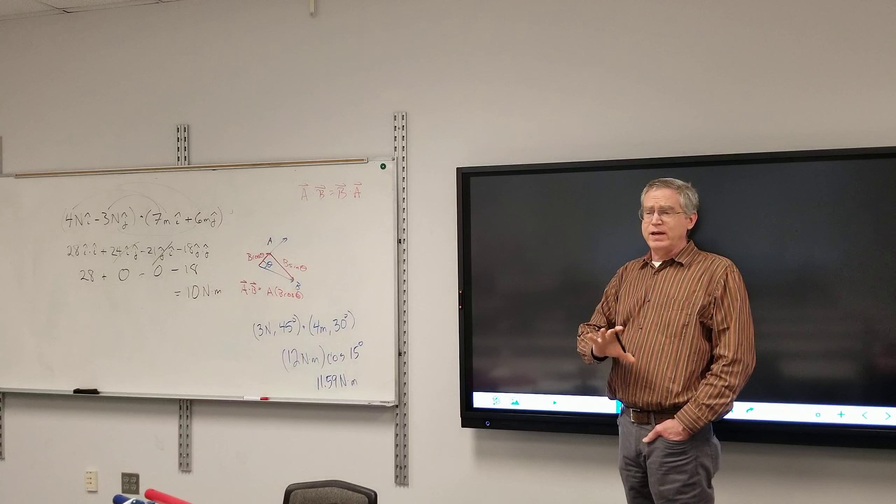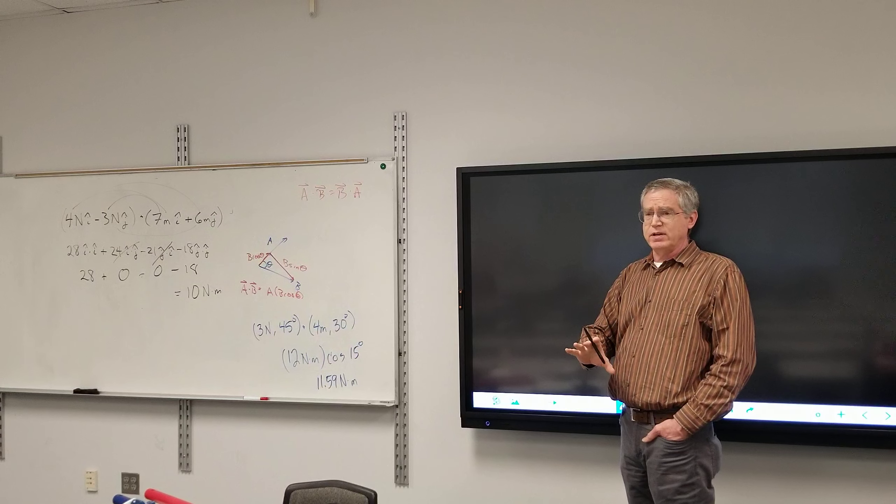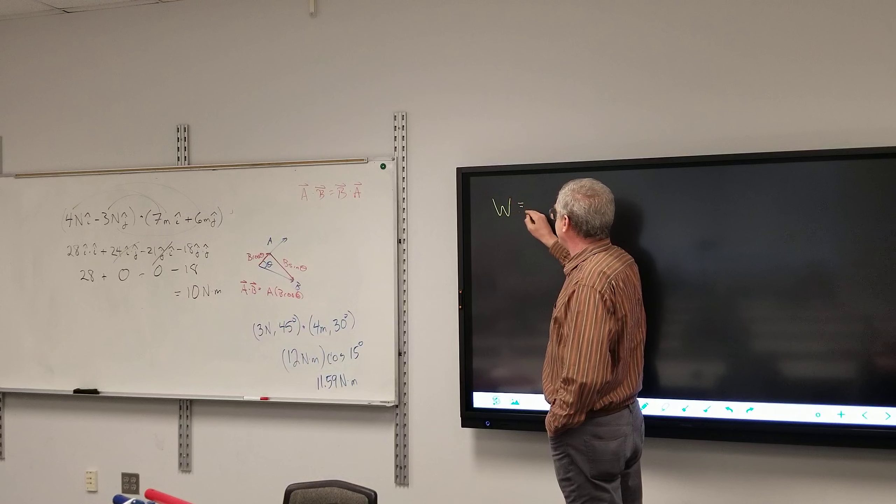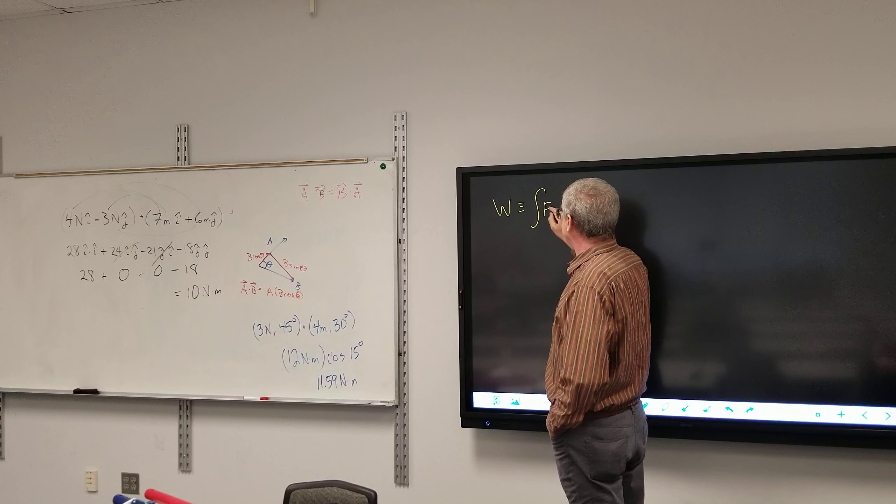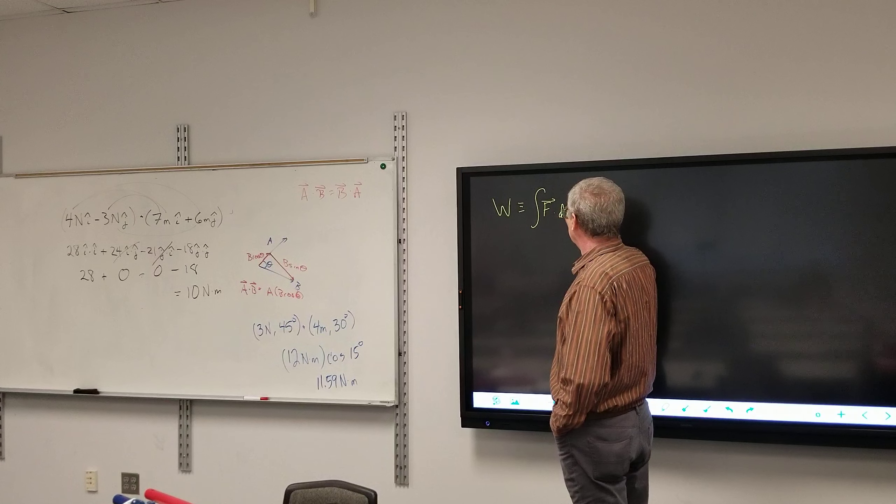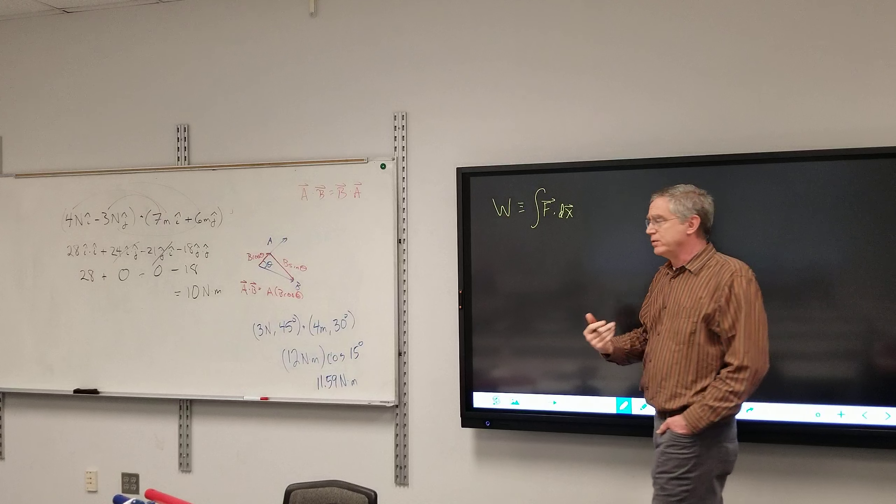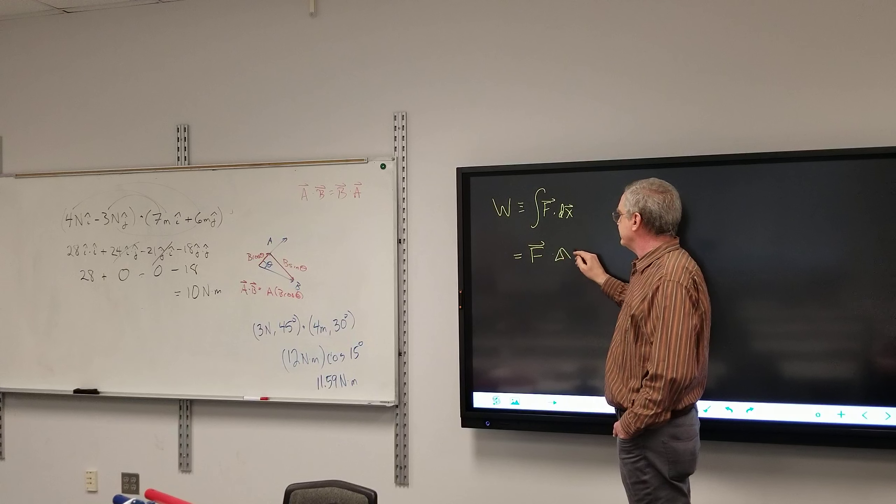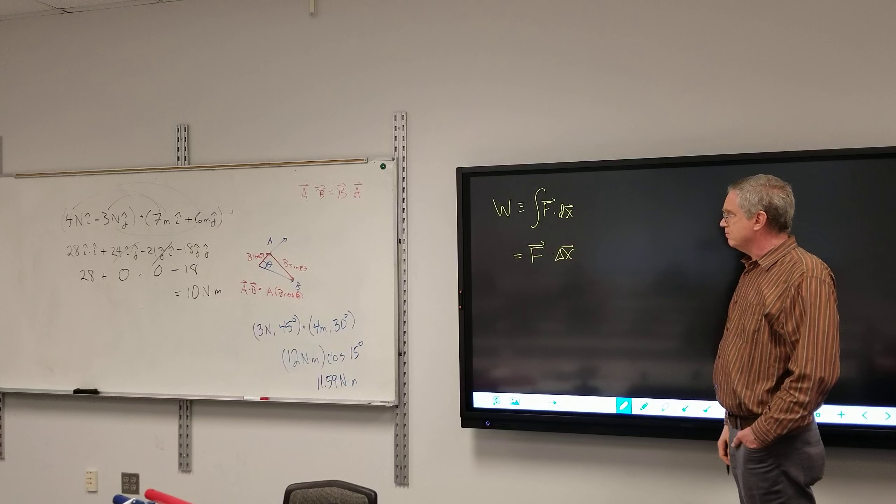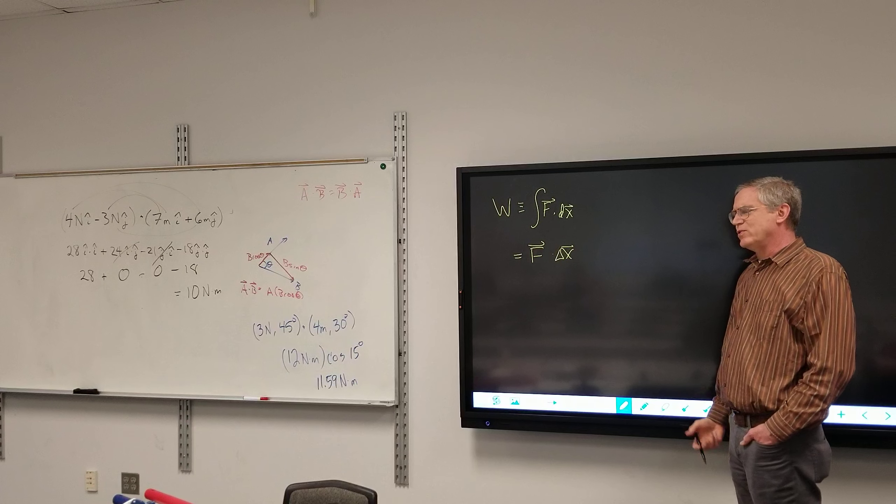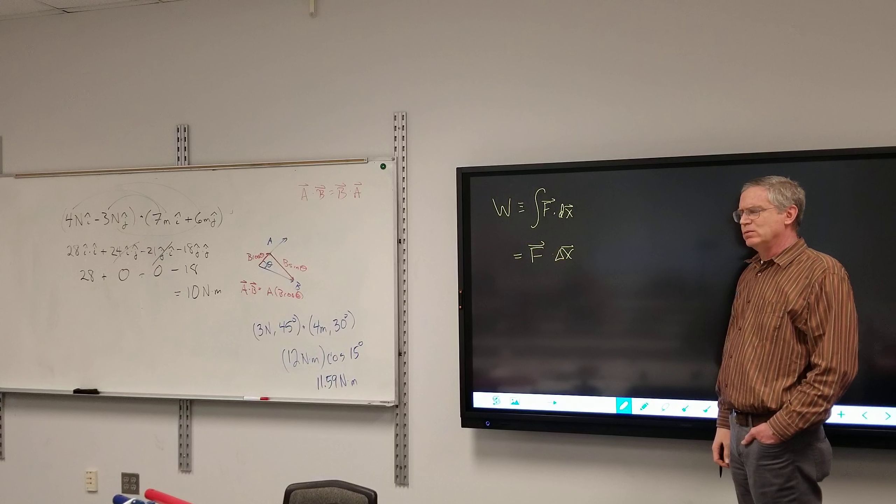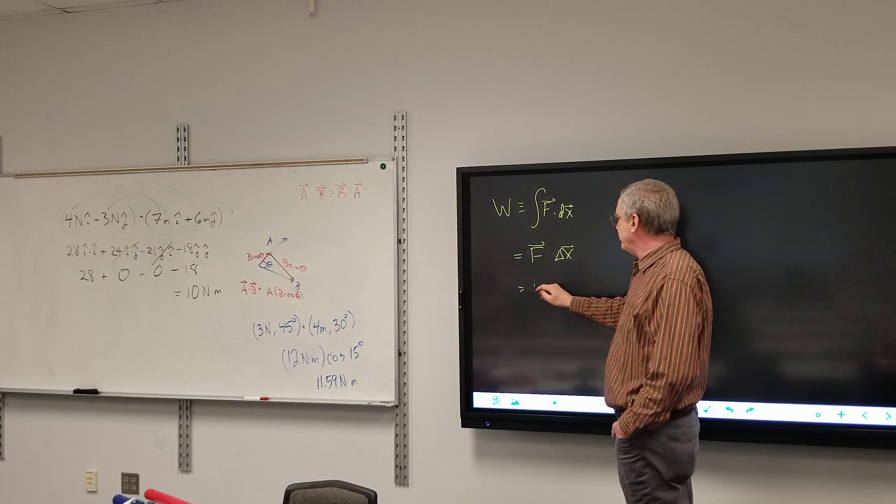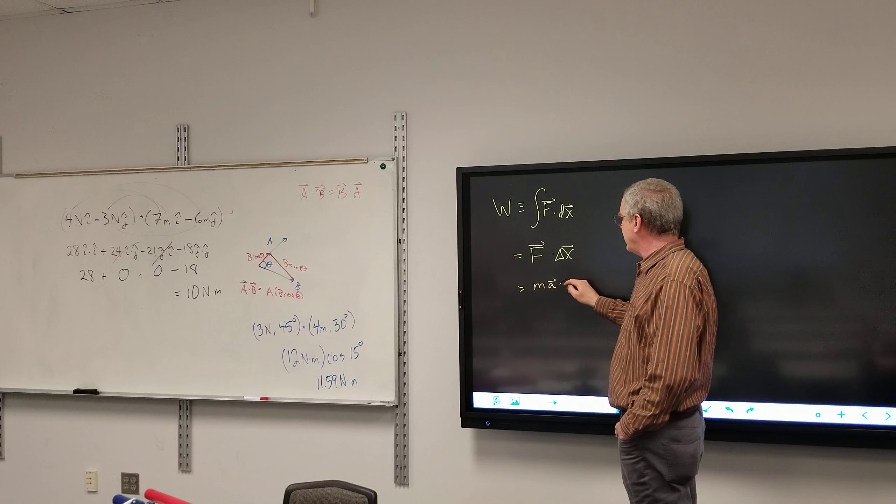I'm going to put something up here. If you've had calculus this might make sense. If you haven't had calculus don't worry about it. Work officially is defined as the integral of F dot dx. As far as we're concerned, F times delta x. Based upon Newton's second law, what does that equal? This should be equal to mass times the acceleration dot delta x.